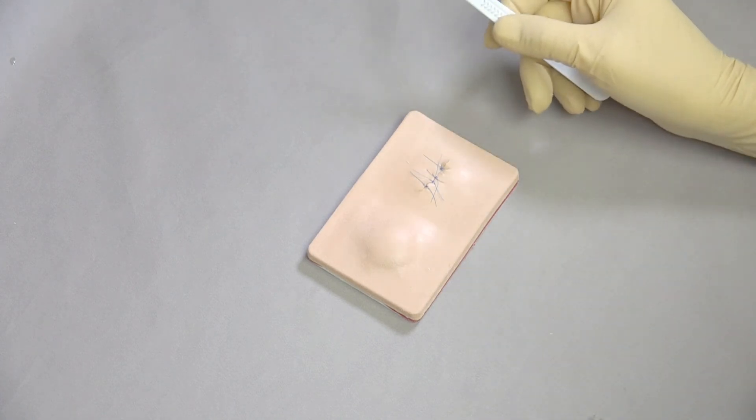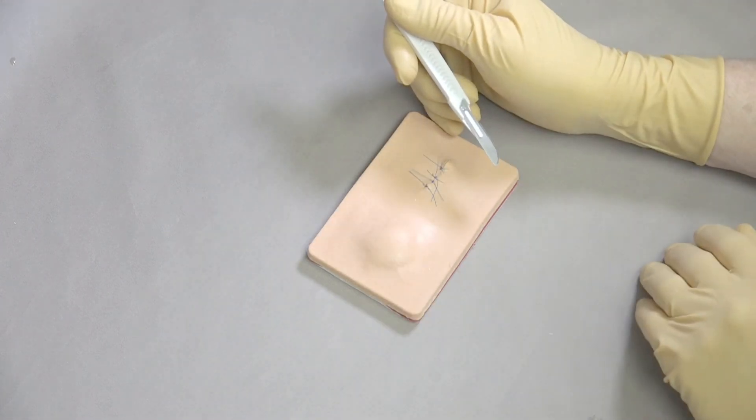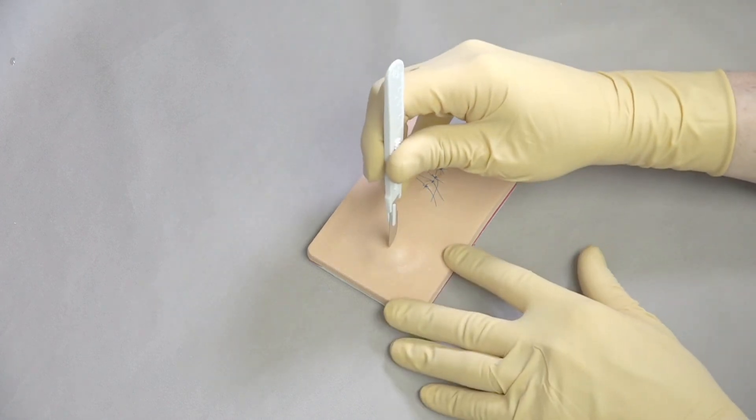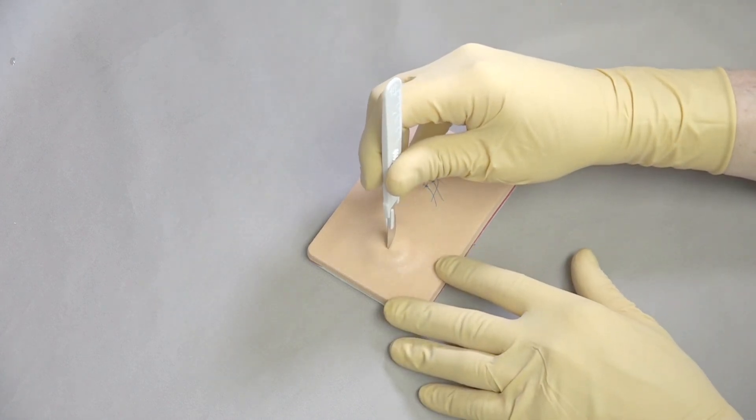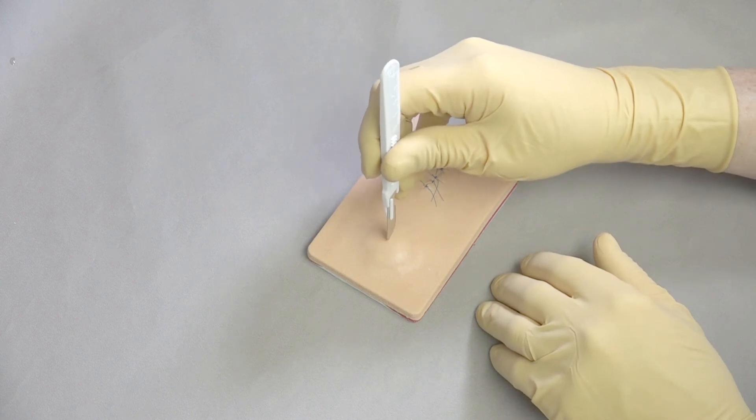So there are a number of ways to lance abscesses. One is to go straight down into it. So we're going to have done some local anesthetic around this and then we're going to go straight down in. And that may well be the easiest way to start with. The problem is that you sometimes can't control the point of your scalpel blade and you get into the deeper tissues.